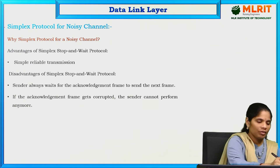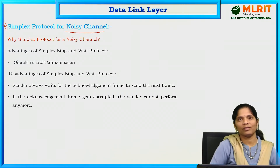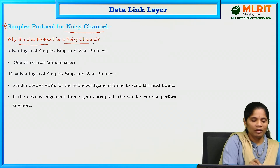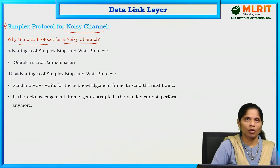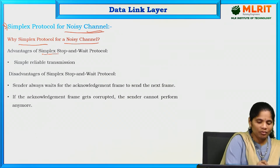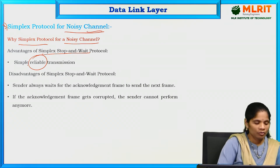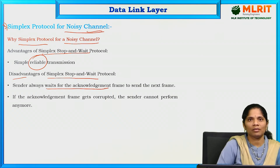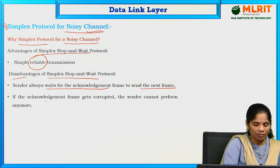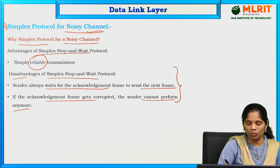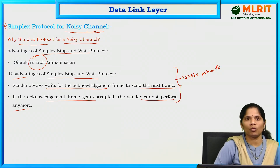The next, third protocol is the simplex protocol for the noisy channel. This is the third one in the flow control mechanism. Why do we go for this? The previous stop-and-wait protocol was for a noiseless channel; this is for a noisy channel. The advantage of stop-and-wait was reliable transmission, but the disadvantage was that if the acknowledgement gets corrupted, the sender cannot perform anymore. To overcome those problems, we use the simplex protocol for the noisy channel.